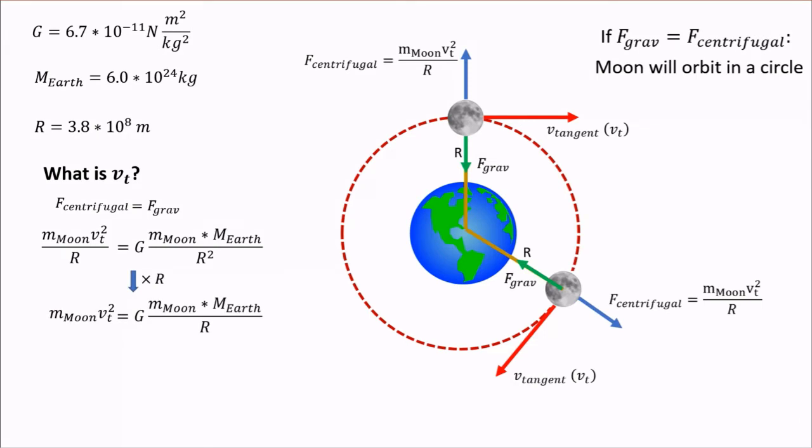Multiply both sides by r. Now divide both sides by the mass of the moon. It's good that the mass of the moon canceled, because I did not tell you what its mass is. Now we just have v squared on one side, so let's get rid of that by taking the square root. We end up with this expression.